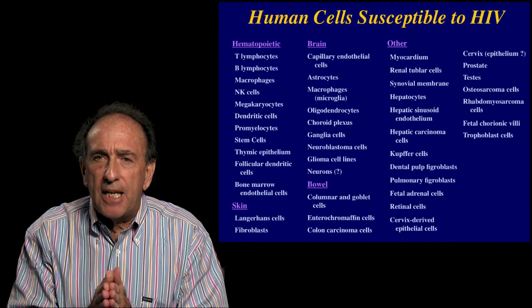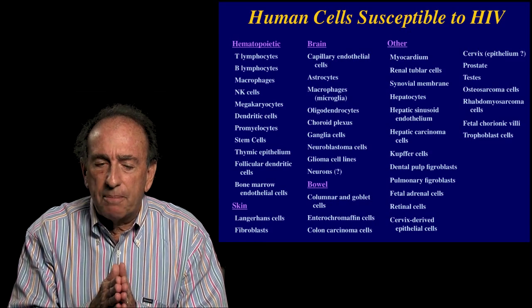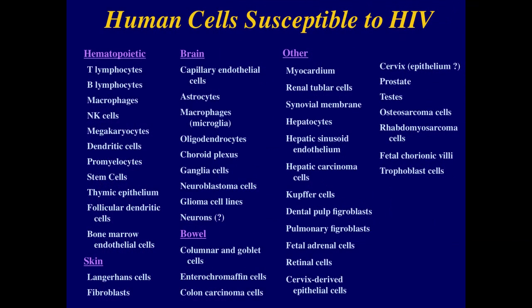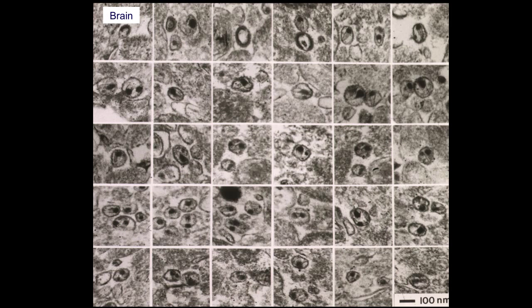We now know that HIV, depending on the virus you are infected by, can cause infection in many different cell types of the hematopoietic or bone marrow system, the skin, the brain, the heart, the kidney, the liver, the testes, and the prostate. This virus is polytropic — it can create reservoirs in these tissues and give disease in them. For example, here is HIV in the enterocytes of the GI tract, and here are pictures of HIV in brain tissues, particularly astrocytes and microglia.